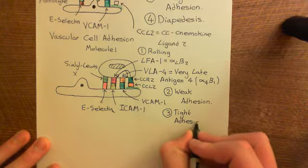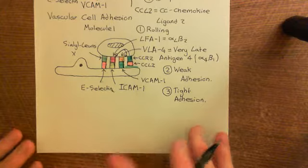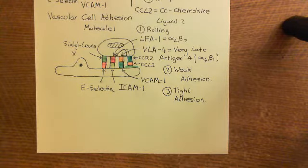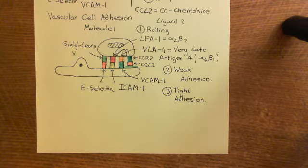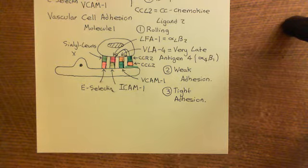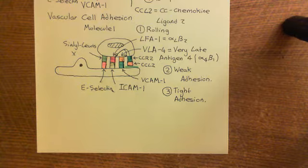Then diapedesis occurs by the same process as before: the monocyte slivers through the gap in the endothelium, with PECAM1 on its surface interacting with PECAM1 lining the gap between the two endothelial cells. The monocyte enters the interstitial fluid at the site of infection, where it differentiates into a macrophage that goes on to kill the pathogen.